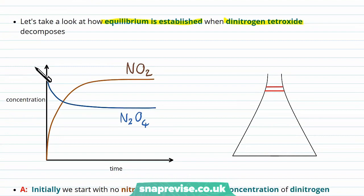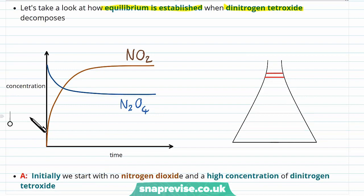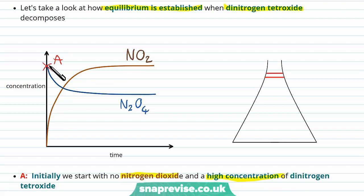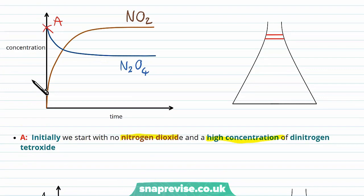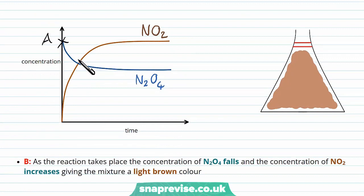Let's look at graphs showing how the concentration of each chemical varies over time. Initially at point A, there is no nitrogen dioxide — the brown line for NO2 is at zero concentration — and we have a high concentration of dinitrogen tetroxide, the blue line. The beaker is shown with a colourless gas. Slightly later at point B, the reaction has started to take place: the concentration of N2O4 has fallen and the concentration of NO2 has increased from zero, giving the mixture a light brown colour.